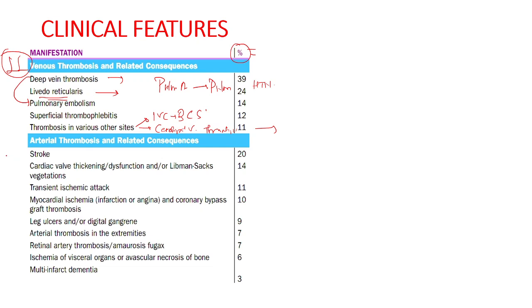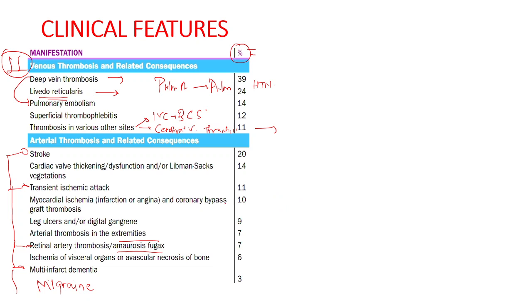Arterial thrombosis more commonly affects the arteries of the brain, manifesting as stroke, transient ischemic attack, or retinal artery thrombosis known as amaurosis fugax. There can also be multi-infarct dementia or migraine as a consequence of arterial thrombosis in the brain.